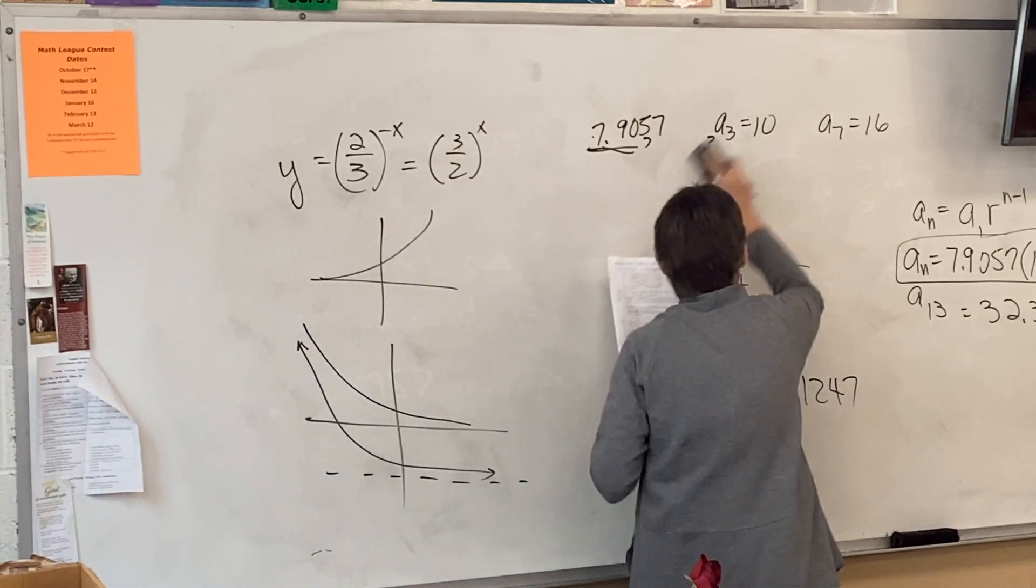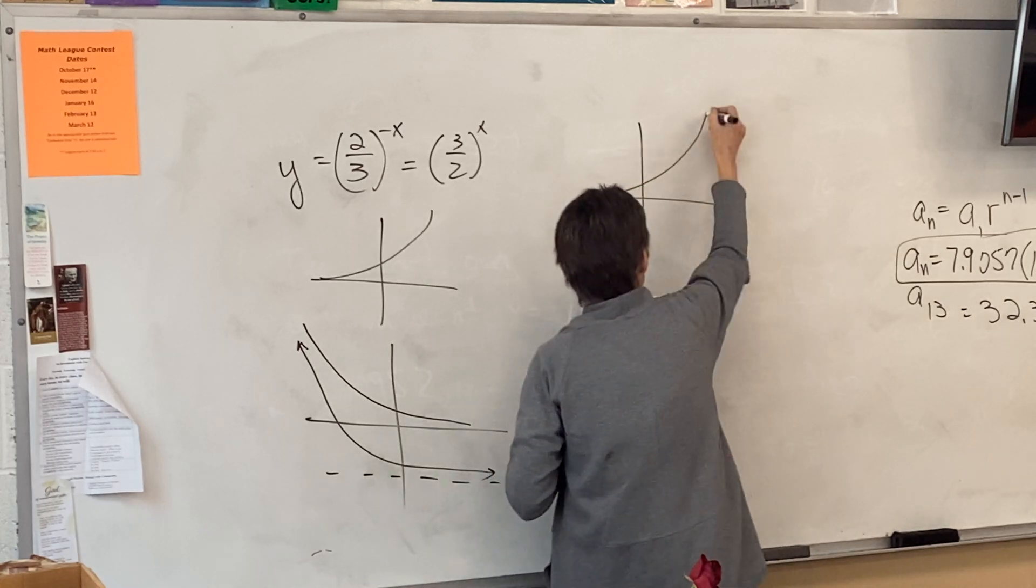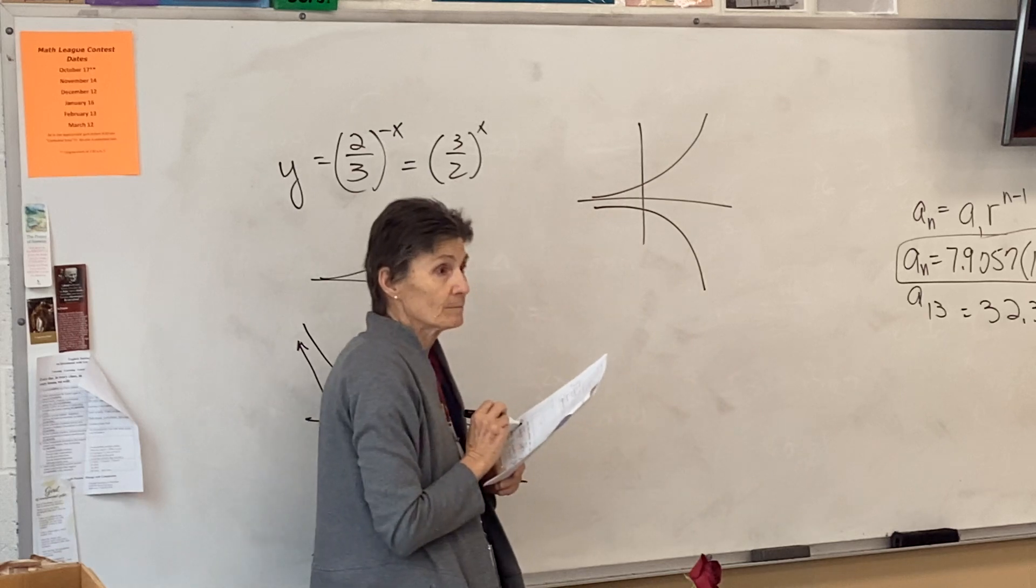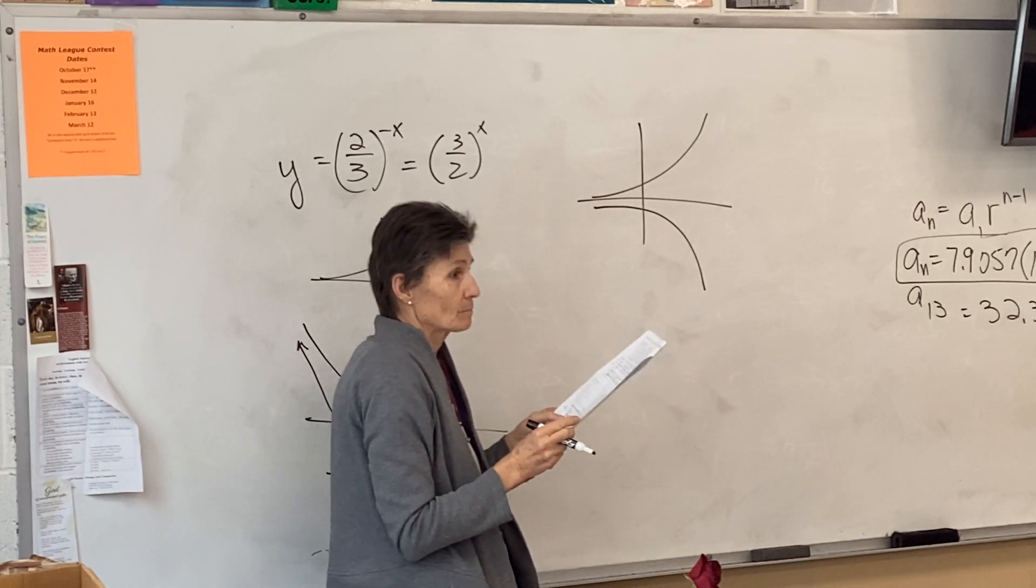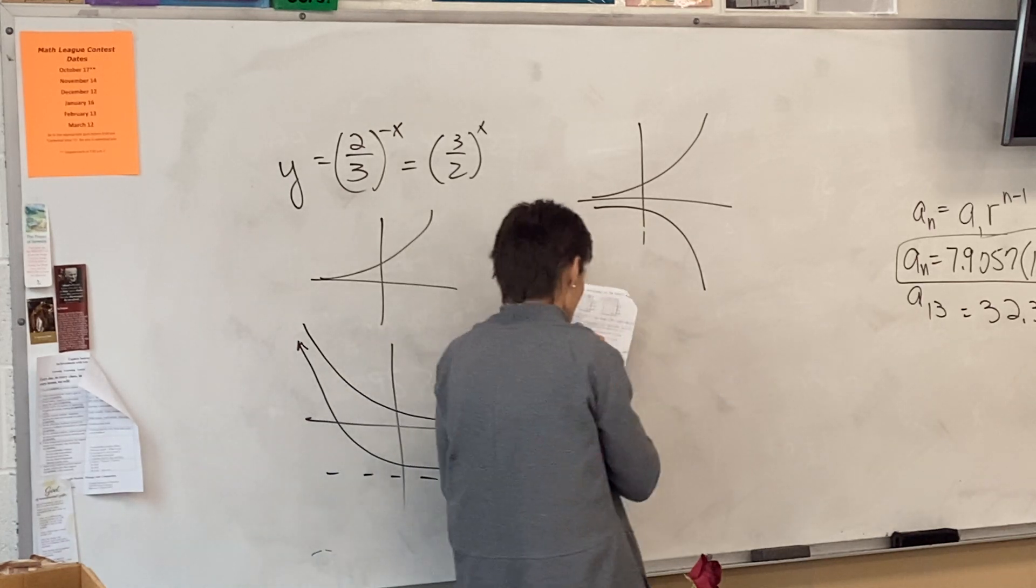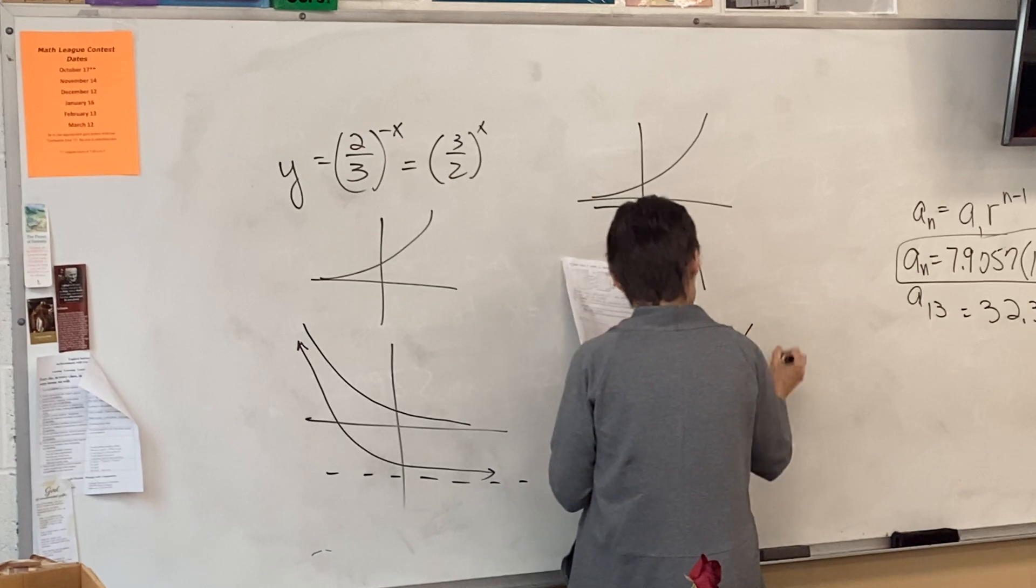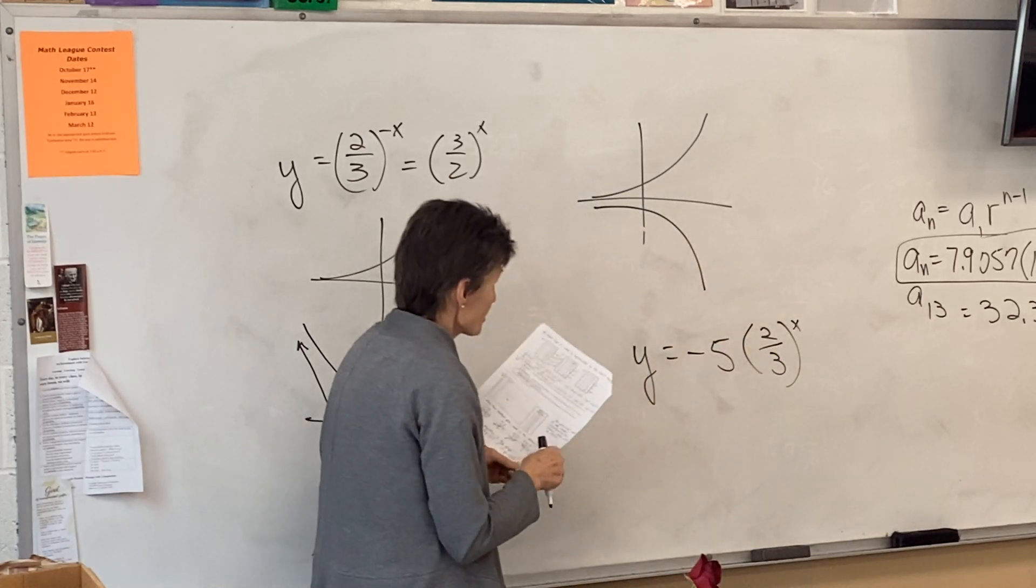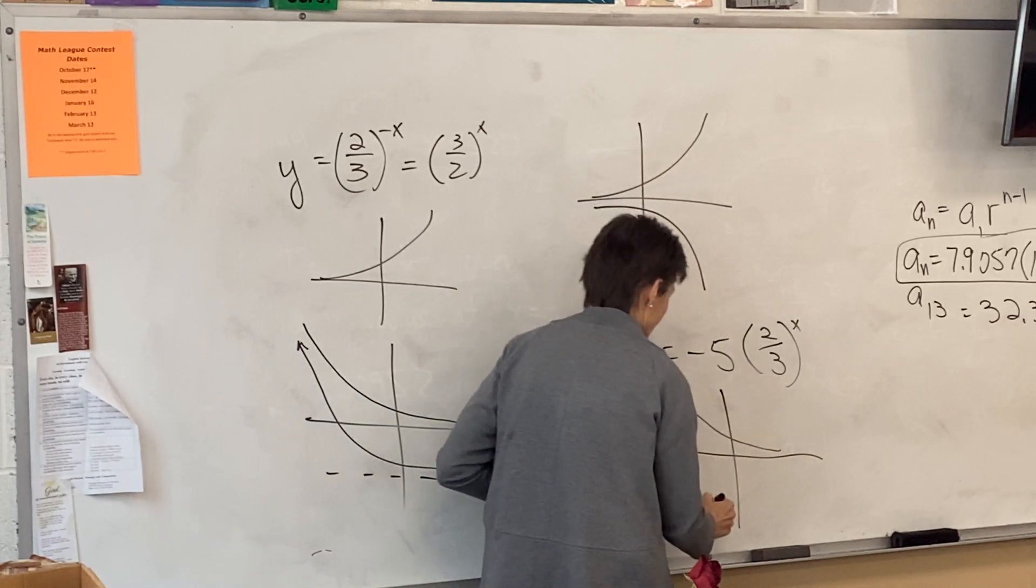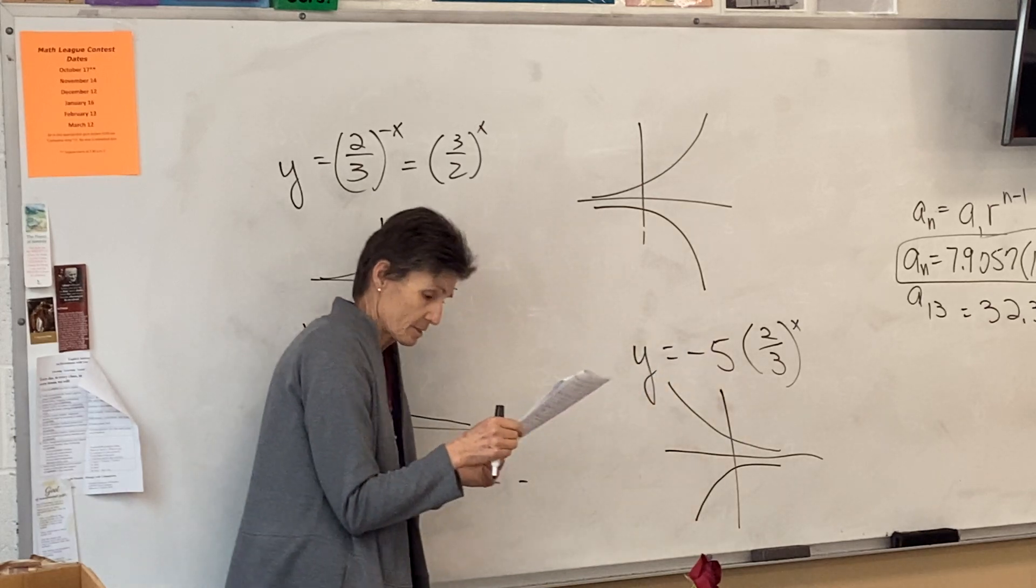C is a growth. So C starts out looking like this, but because of the negative 3, it turns it upside down. Do I have one that looks like that? Yeah. So this right here is a picture of C. And then D, so first thing I'm going to do is flip that, so it's 2 thirds to the x. So that's going to be decay, but because of the negative, it's flipping it over. So I need one that looks like that. I have one that looks like that. So that's the key.